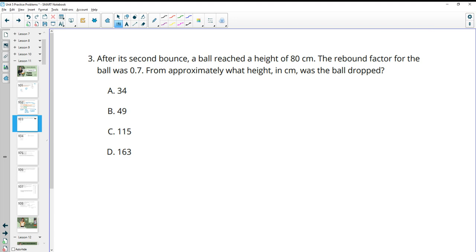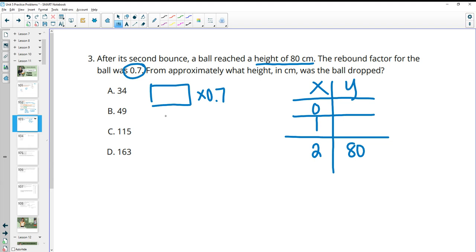Number three, after its second bounce, a ball reaches a height of 80. The rebound factor for the ball was 0.7. From approximately what height was the ball dropped? Now you have a couple different ways of tackling this problem since it's multiple choice. So we know that the second bounce, so 0, 1, 2 bounces produces 80, right? And then the factor is 0.7. So this means whatever our initial amount is, we're going to multiply that by 0.7. And then we're going to take that new amount and we're going to multiply by 0.7 again, right, to get to 80. So you could just do that to each of these. You could multiply each of these by 0.7 twice and see which one got you the closest to 80. That's one way to do it.